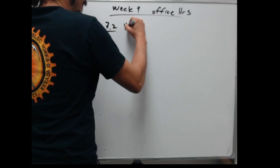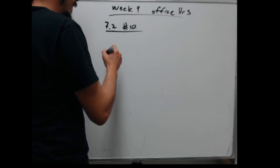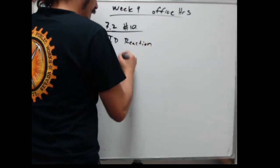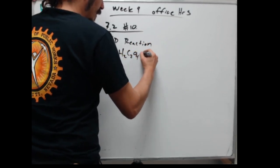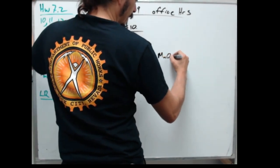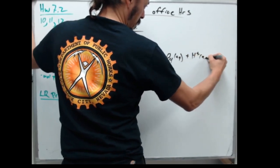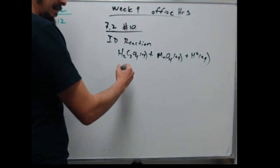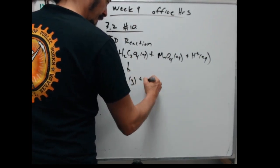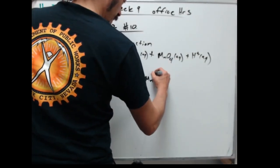Problem 10 was to identify the reaction type. The reaction was H2C2O4 aqueous plus MnO4⁻ aqueous plus H⁺ aqueous, producing CO2 gas plus Mn²⁺ plus H2O.